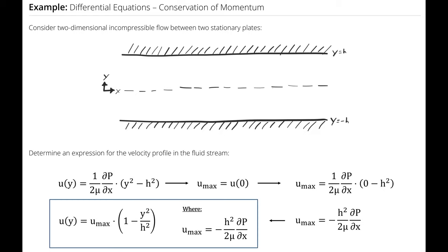When I make that substitution into my original equation, what I'm left with is u(y) = u_max(1 - y²/h²), where u_max = -h²/(2μ)(∂P/∂x).